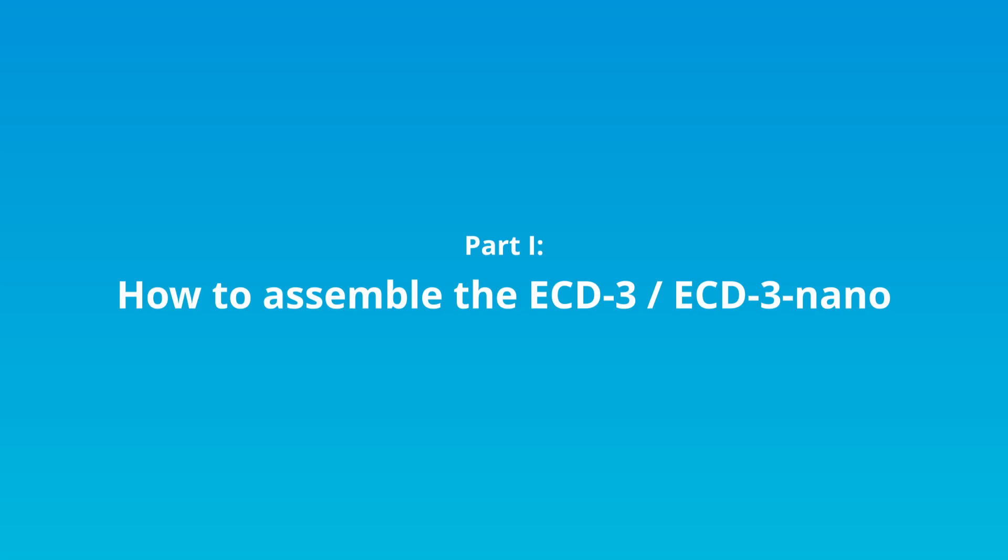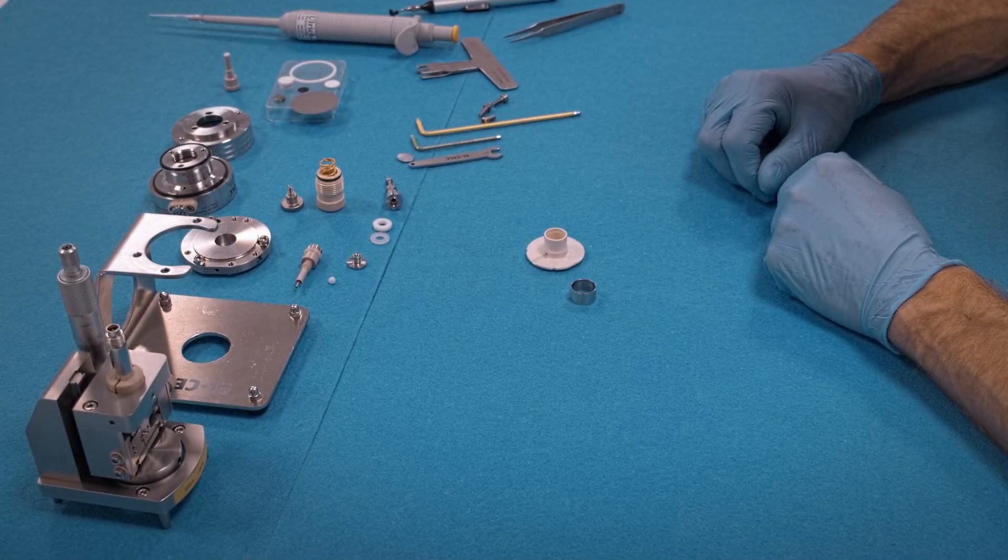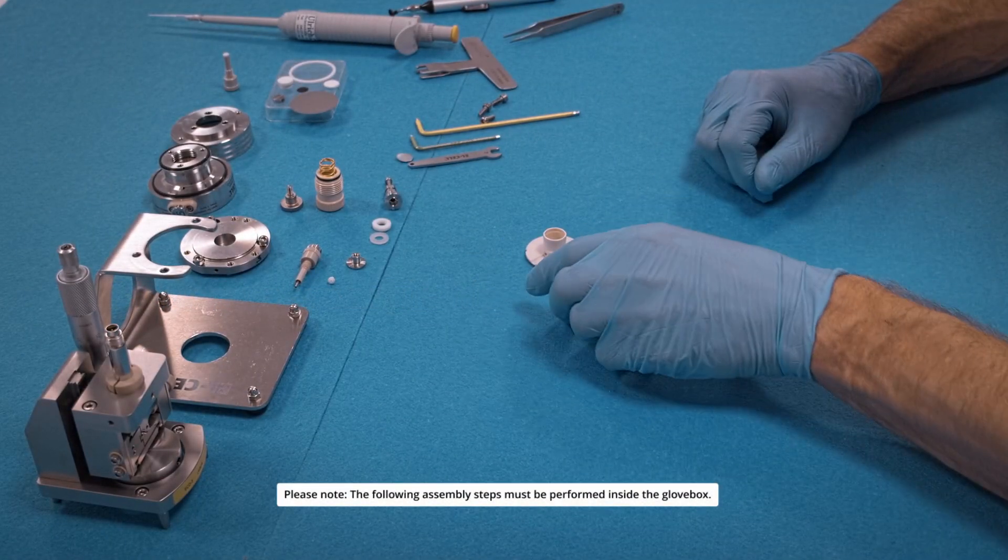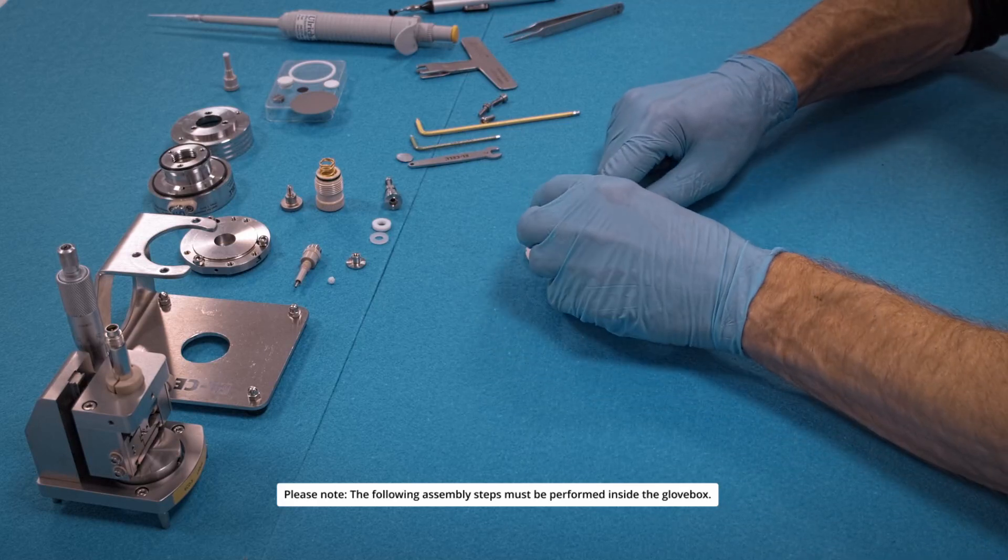This video explains assembly and disassembly of the ECD3 dilatometer. Part 1 is about assembly. First, we have to assemble the frit flange.